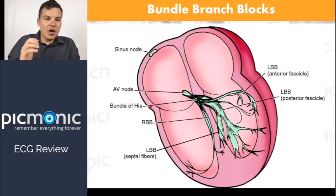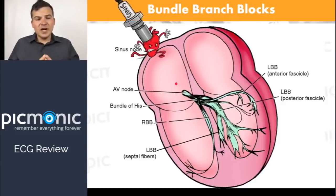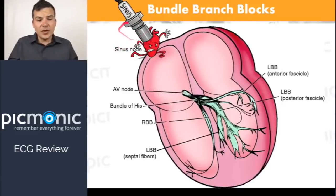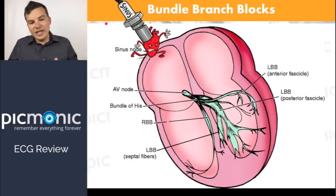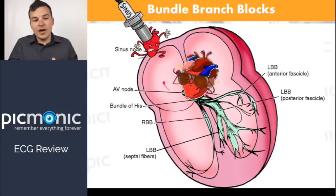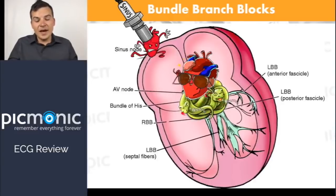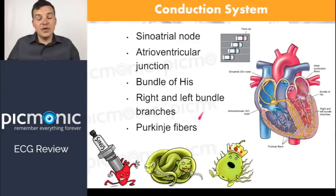Now let's talk about the electrical physiology of the heart. We have to talk about the sinoatrial node — we've got this little spark plug at the top of the heart. Electrical activity comes from the right side of the heart all the way down to the left ventricle. It travels from the sinoatrial node to the AV node, then down to the bundle of His and then the Purkinje fibers out to the rest of the heart.